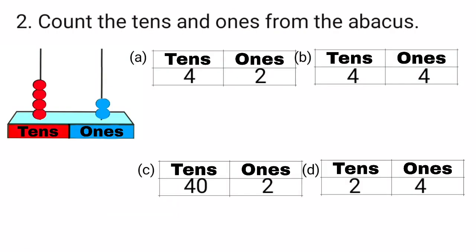Count the tens and ones from the abacus. Here we have an abacus with 2 rods. We will count the beads in ones rod. Let's count the bead in ones rod: 1 and 2. 2 beads are there, that is 2 ones.